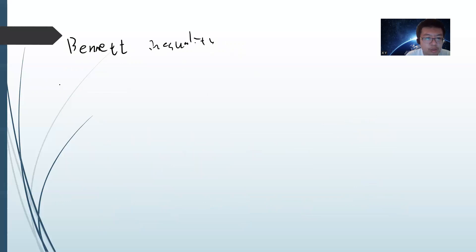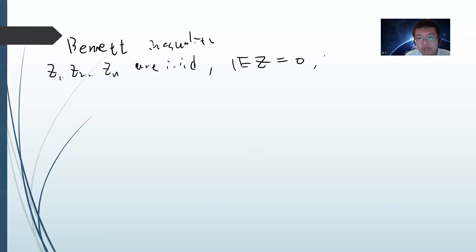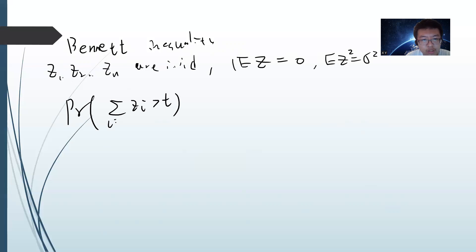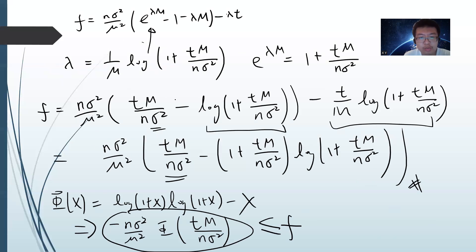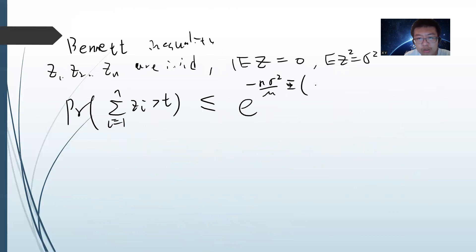We use the Bennet inequality. If you haven't seen the Bennet inequality, you can check it out. Basically, z1, z2 up to zn are random variables, the expectation of zi is zero, the second moment is sigma squared, and we bound the probability that the sum of zi from i equals one to n is greater than t. This is bounded by an exponential function: exponential of minus n squared divided by m squared, times phi of t over n times sigma squared, where phi of x equals one plus x times log of one plus x, minus x.